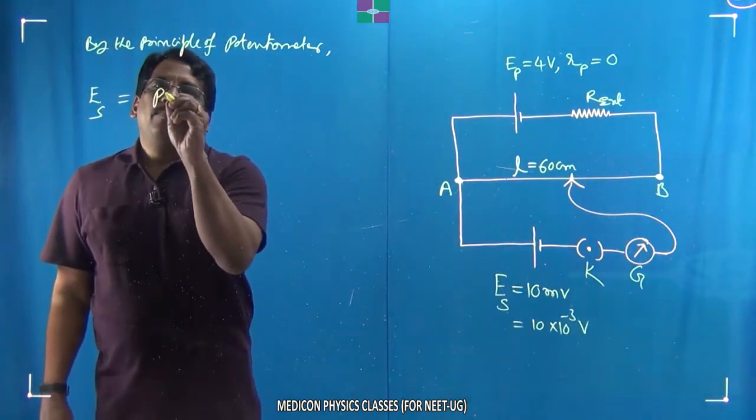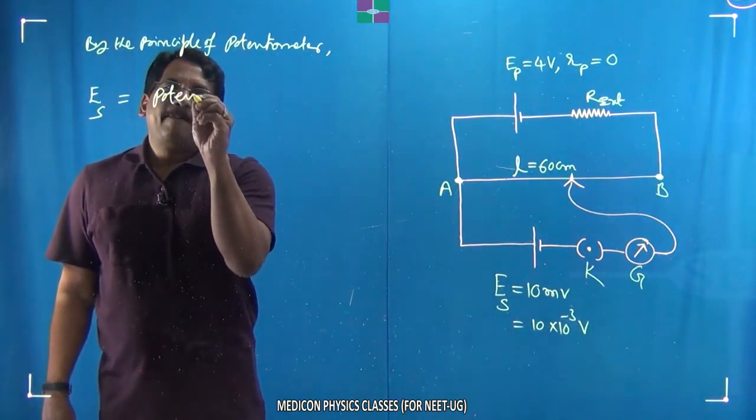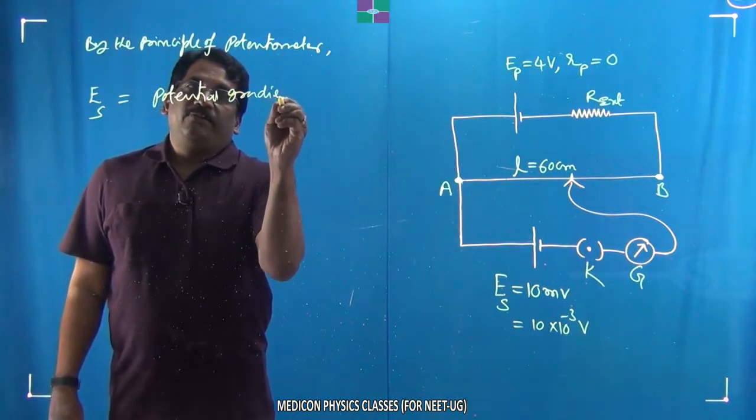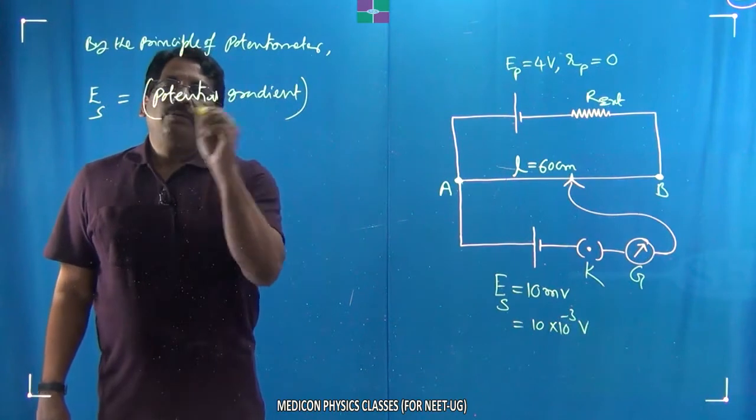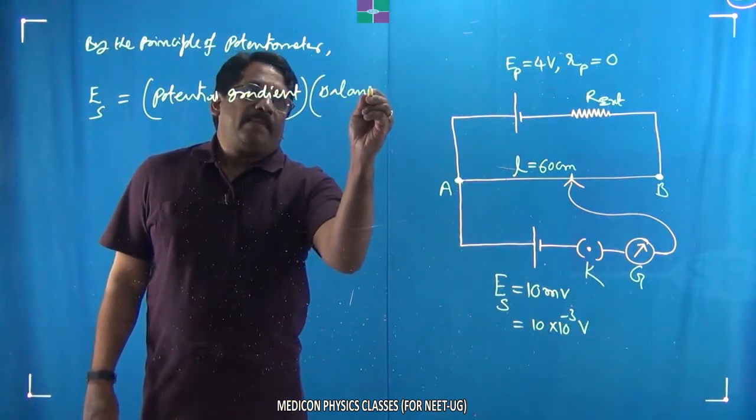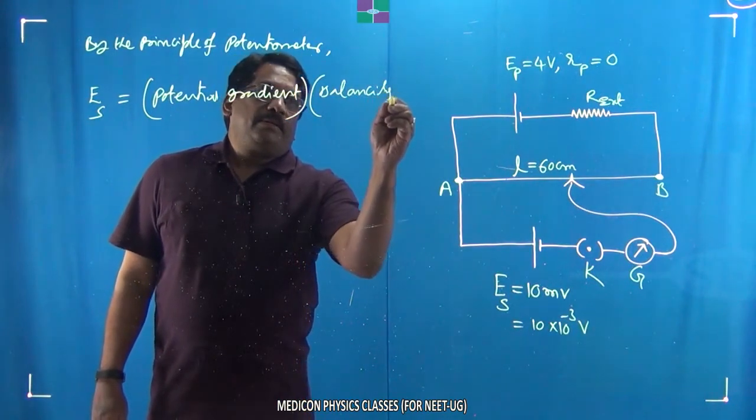equals the potential gradient along the length of the wire multiplied by the balancing length.